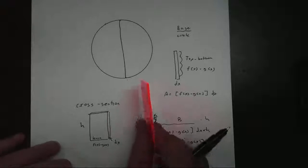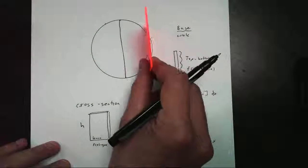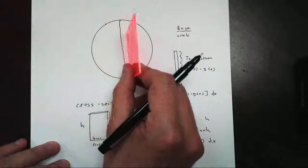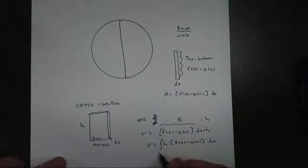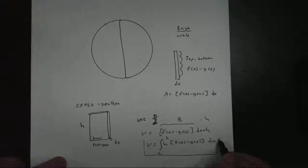But what's going to happen is, we're going to have lots of cross-sections as we go from left to right. So we integrate that to get all of the cross-sections from a to b, depending on the domain. And that's how we find the volume of a cross-section.